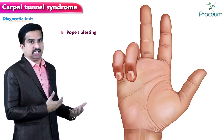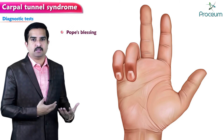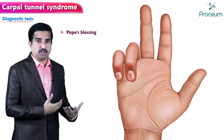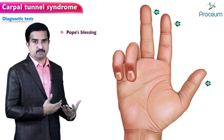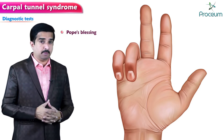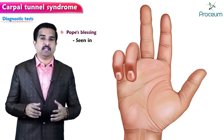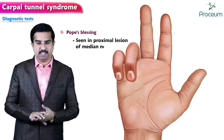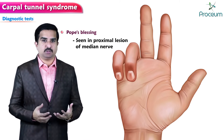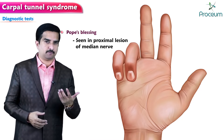Pope's blessing sign is seen in median nerve injury patients who are unable to flex the first three digits when making a fist. Importantly, this is not a symptom of carpal tunnel syndrome — it is only seen in proximal lesions of the median nerve, where the injury is proximal to the carpal tunnel, most often in the arm or upper forearm.